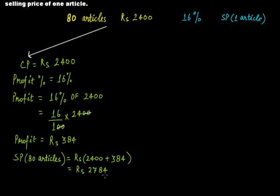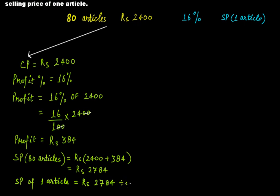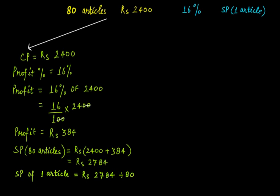From the selling price of 80 articles, we can calculate the selling price of one article. For one article, the selling price is rupees 2784 divided by 80, and when you solve this you get rupees 34.8 — that is rupees 34 and 80 paise. This is the selling price of one article.